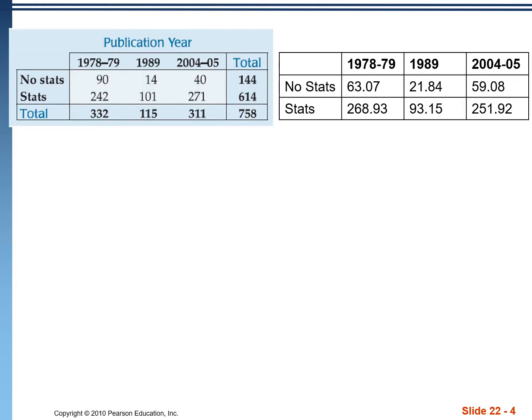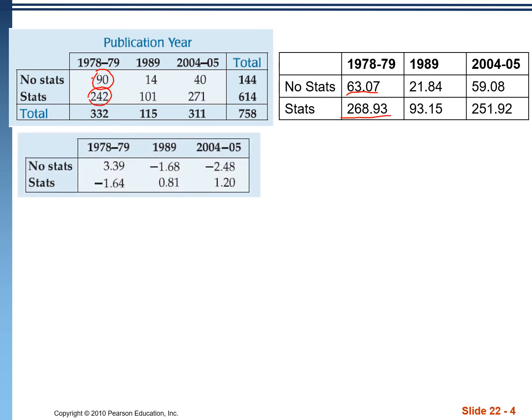Now, if we compare these two tables, we see that some cells have more than expected. For example, we got 90 when we were only supposed to get 63. Some have less than expected — we got 242 when we were supposed to get 268. So those differences are important, and that's what we're going to use to figure out our residuals.